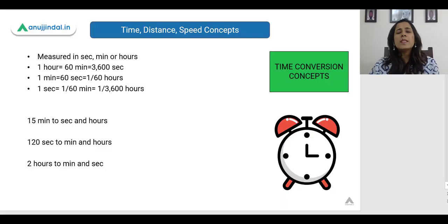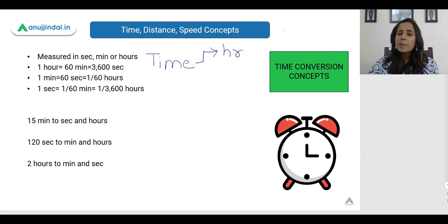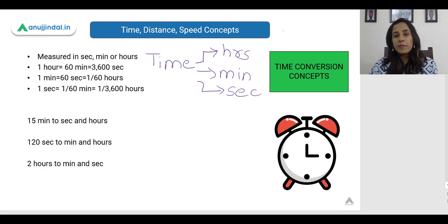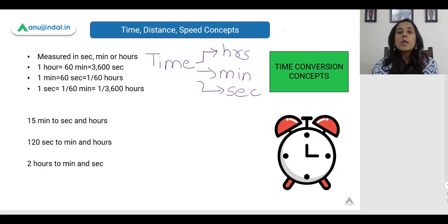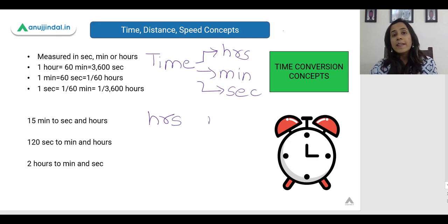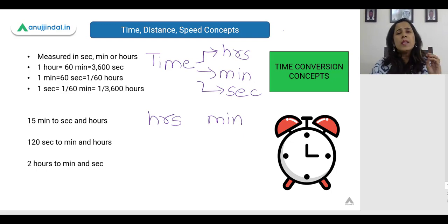Let us start this video with simple conversion concepts. The unit for time — time is measured in hours, it can be measured in minutes, and it can also be measured in seconds. So we have these three common units of time. You have to see what the question specifies: if the question is asking you to find the answer in hours and you find it in minutes without converting, then you end up getting the wrong answer.